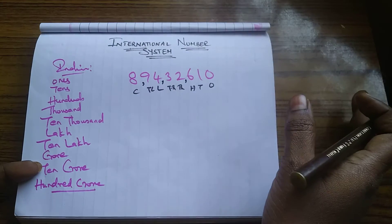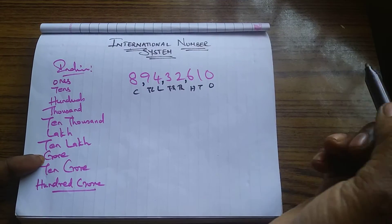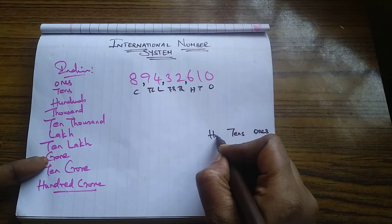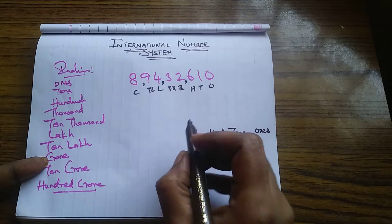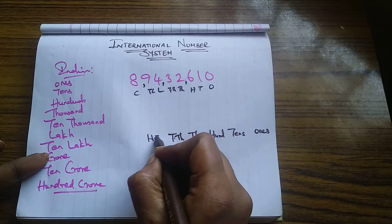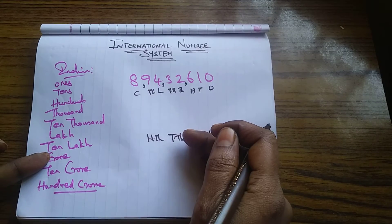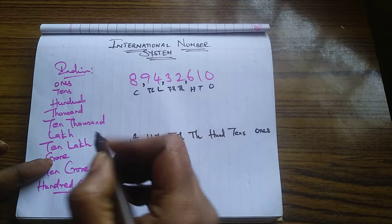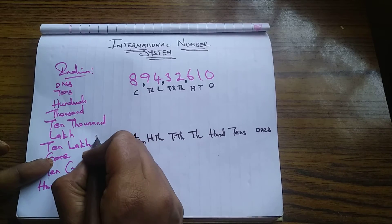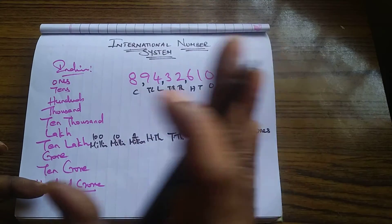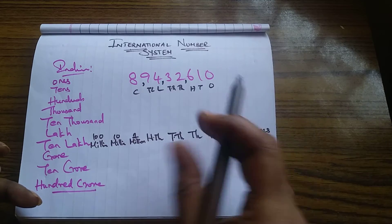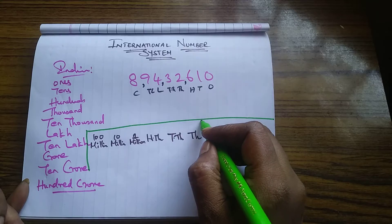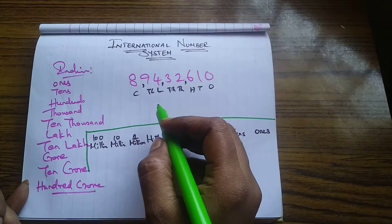Now what is the international number system and how are we going to name numbers in it? We start the same way with ones, tens, hundreds, thousands — but watch carefully — ten thousands and hundred thousands. Next starts one million, ten million, hundred million. And then comes billion, ten billion, hundred billion. Then comes trillion, ten trillion, hundred trillion. This is how it works, and by comparing it to the Indian system you can easily name the numbers.